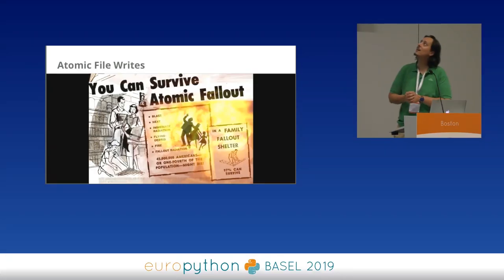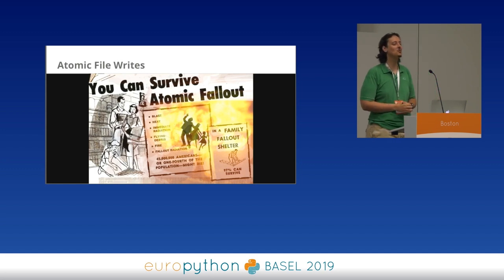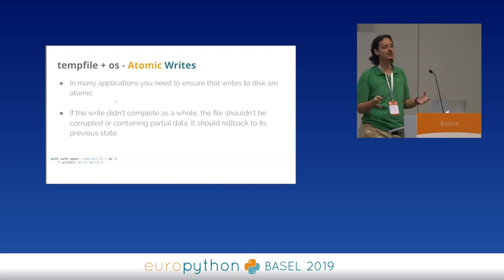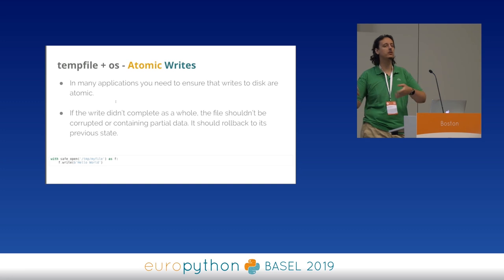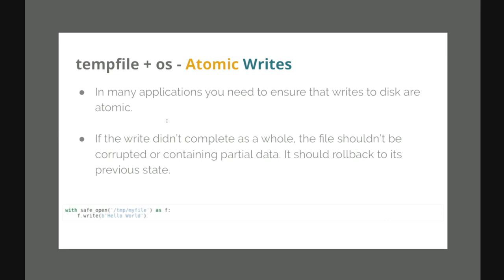The next feature available in the standard library is how to handle atomic writes — or as I like to say, how to survive atomic writes. In many web applications, there is a need to replace the content of a file — say an uploaded image or something stored on disk — only if you successfully completed writing it. If your process gets killed or crashes in the middle of the write, you should not have corrupted the file you were replacing.